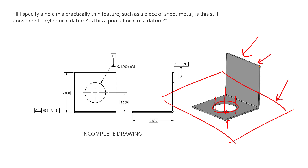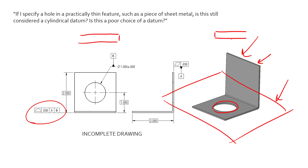So we would want to use that hole as a secondary datum feature. The short answer to your question is yes — you can use a hole on a thin piece of sheet metal as a datum, and technically it is a cylindrical datum. The ASME standard allows us to use holes as secondary datums. It doesn't say anything about how deep that hole is or how to measure or gauge it — that's left up to our quality departments. On a micro scale, the depth of this hole is very shallow.